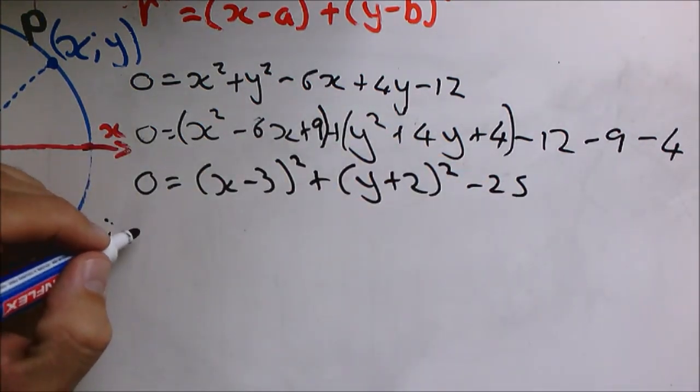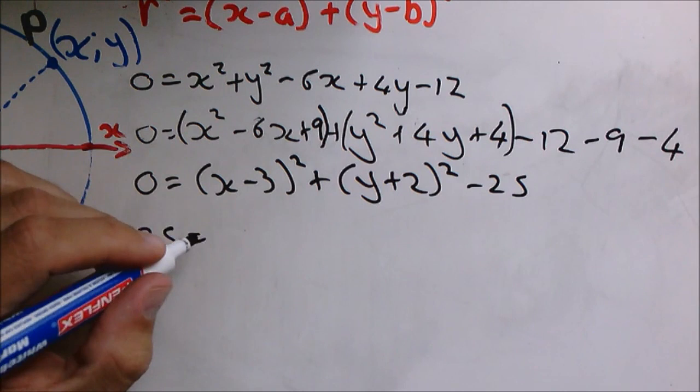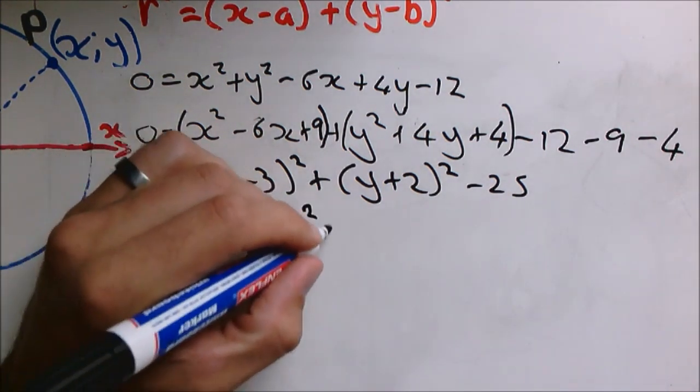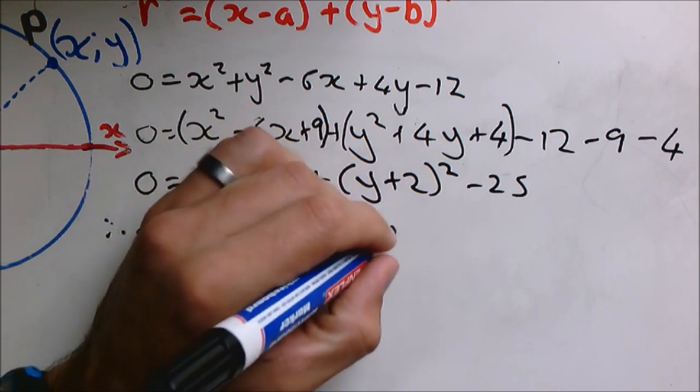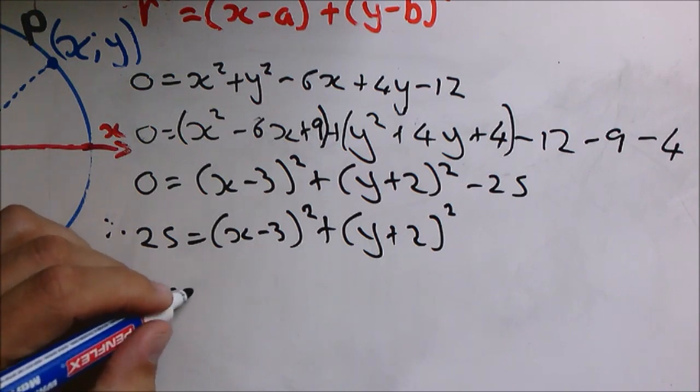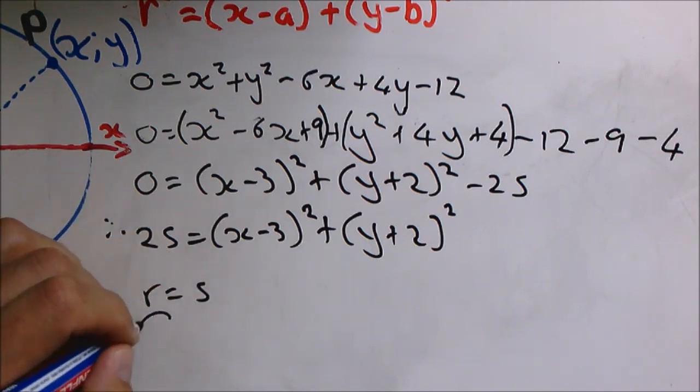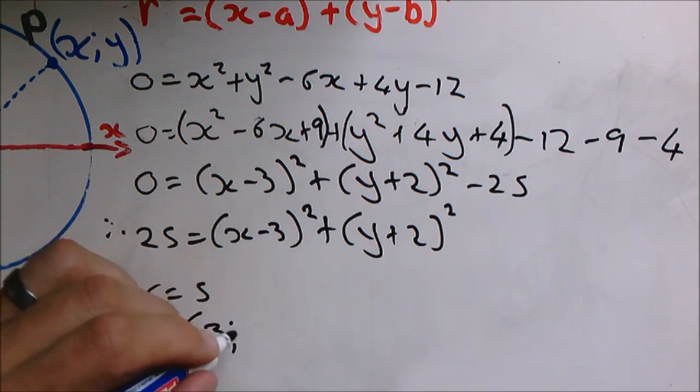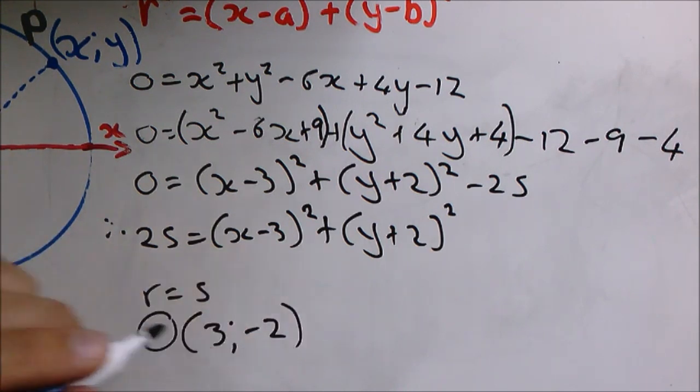Therefore, 25 equals bracket x minus 3 square plus bracket y plus 2 squared. And now it's easy to see that the radius is 5 units, and the coordinates of the center of the circle is 3 and negative 2.